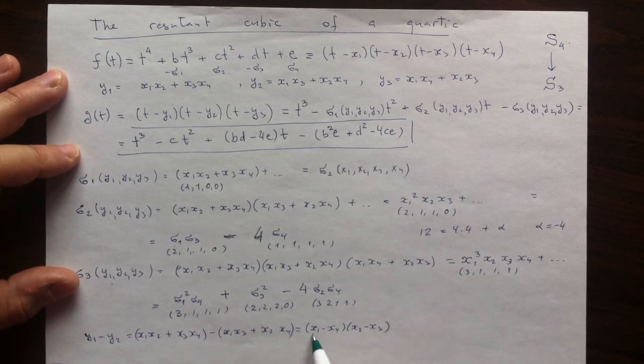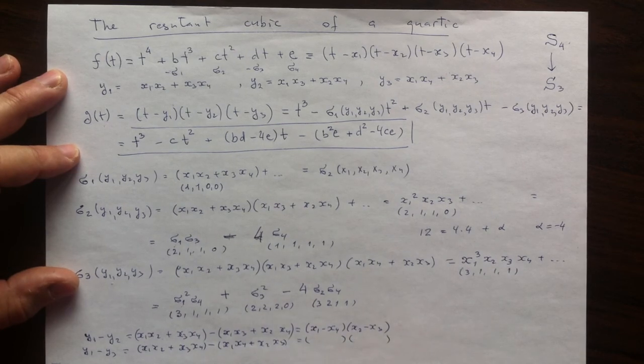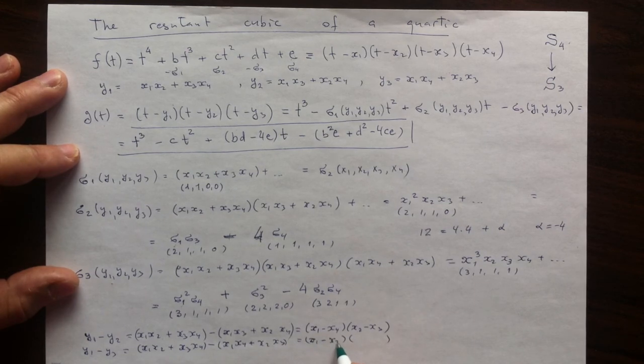Here, if you want to collect the positive products, you will have x1 with x2, and you will have x4 with x3. Similarly, y1 minus y3 is x1, x2, plus x3, x4, minus x1, x4, plus x2, x3, is a product of two differences. You can see what they are: x1 minus x3, x2 minus x4.